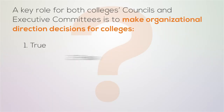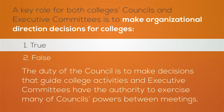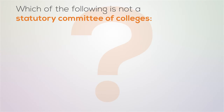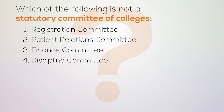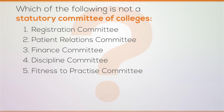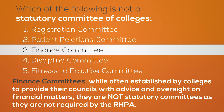Let's do a quick review. True or false: a key role for both colleges' councils and executive committees is to make organizational direction decisions for colleges. The answer is true. The duty of the council is to make decisions that guide college activities, and executive committees have the authority to exercise many of council's powers between meetings. Which of the following is not a statutory committee of colleges? The Registration Committee, the Patient Relations Committee, the Finance Committee, the Discipline Committee, or the Fitness to Practice Committee. The answer is the Finance Committee. While they are often established by colleges to provide advice and oversight on financial matters, they are not statutory committees as they are not required by the RHPA.